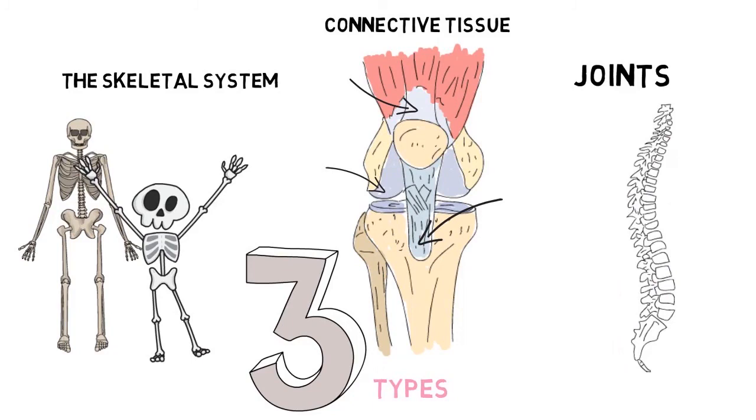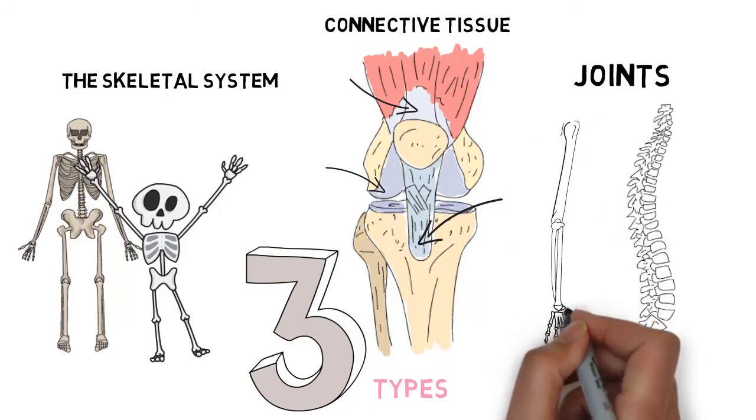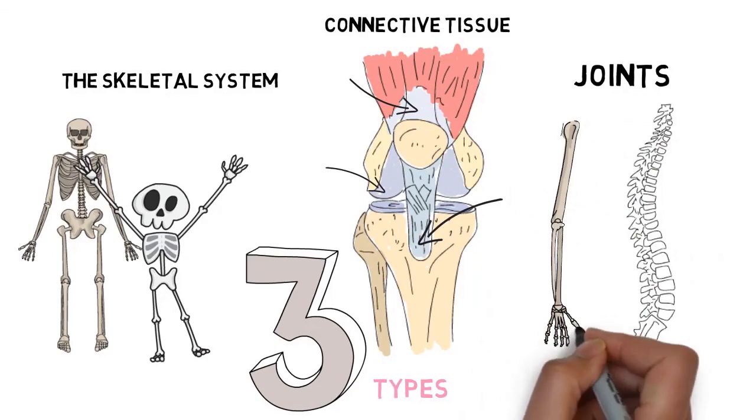Freely moving joints contain synovial fluid that lubricates the joint, allowing it to move freely like the shoulder.